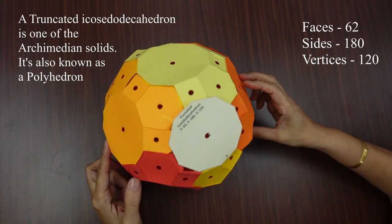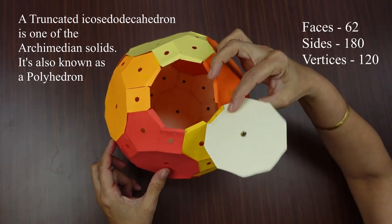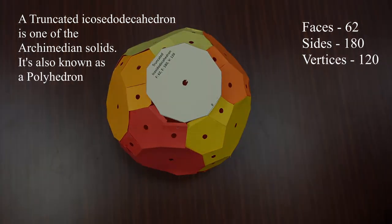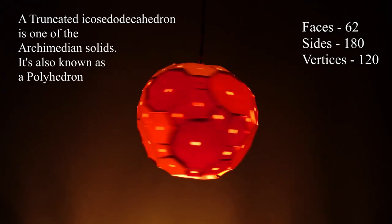This truncated icosidodecahedron has 62 faces, 180 sides and 120 vertices. It is a polyhedron.